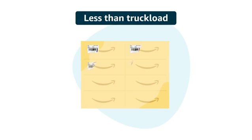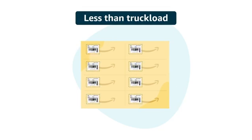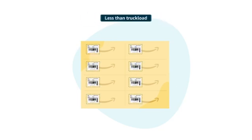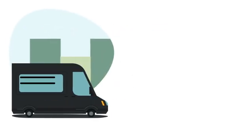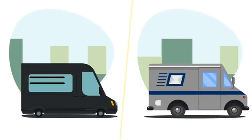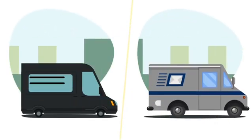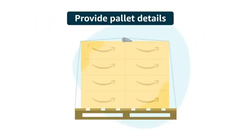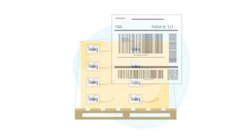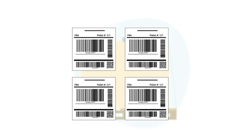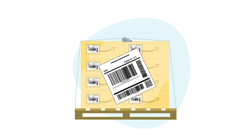If you're shipping pallets, an FBA box ID label will have to be placed on each box before you load them onto a pallet. Once the boxes are palletized, you'll be prompted to choose your carrier and provide pallet details for each shipment in the workflow. After confirming pallet information, you'll get four pallet labels for each pallet, one for each side of a pallet.